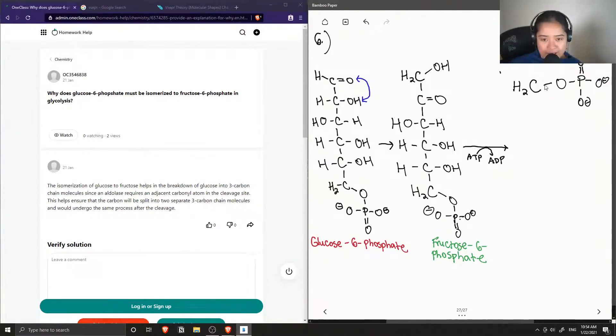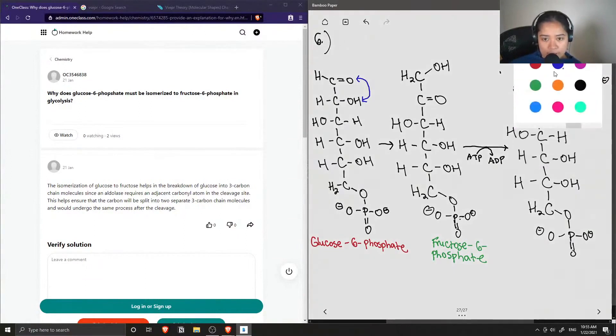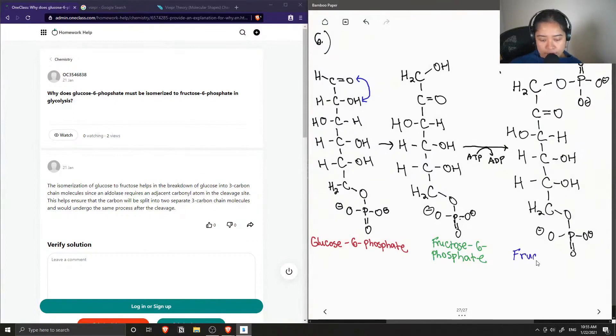So that's a double bonded oxygen at the top. And you can see that this ketone is here, and then the rest of the molecule looks the same. And the name of this molecule is fructose 1,6-bisphosphate.